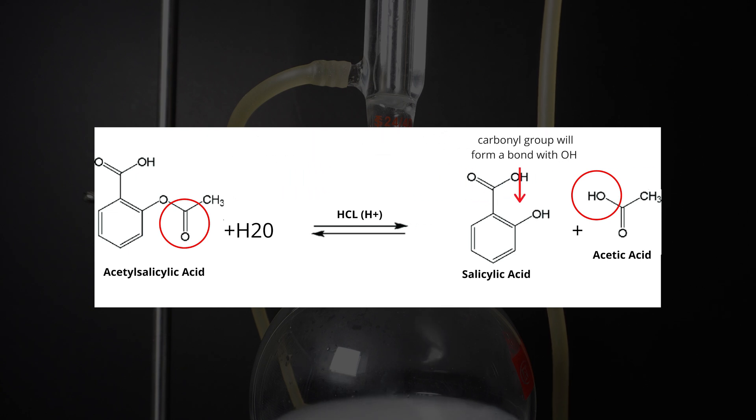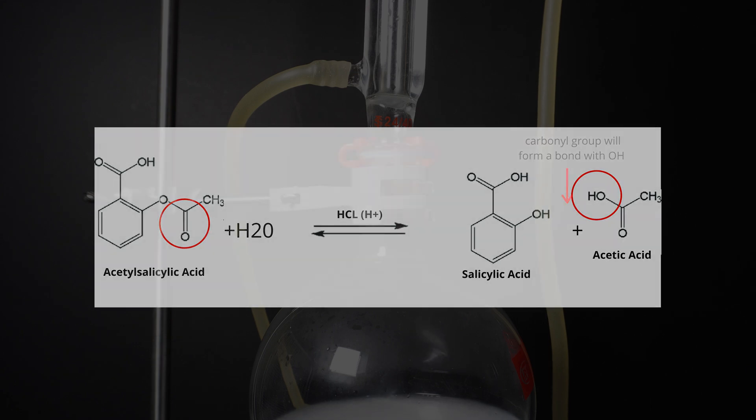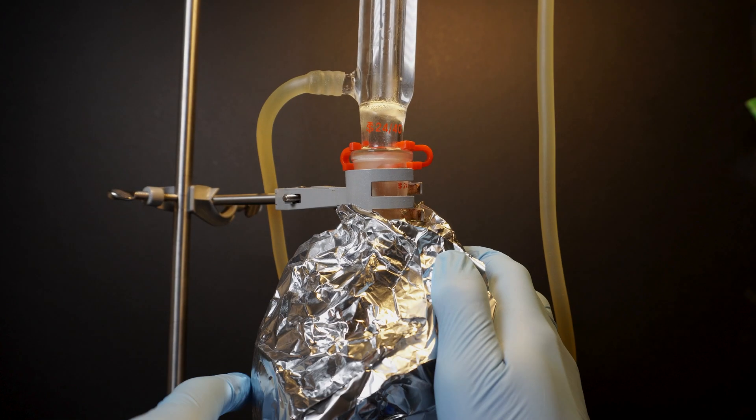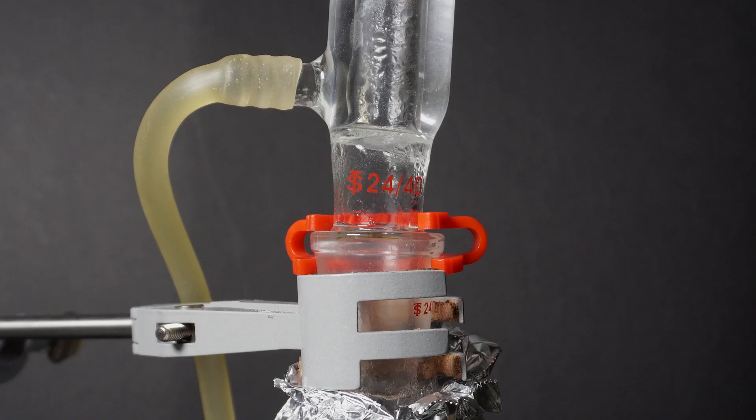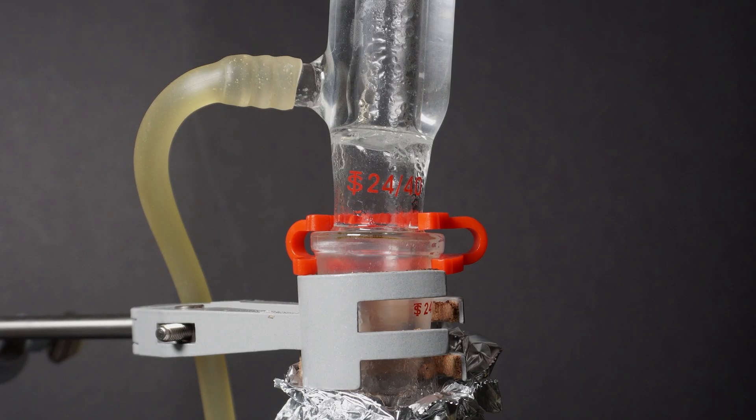To get everything to boil nicely I add some aluminum foil to insulate my round bottom flask. This will speed everything up just a little bit more. Once I see phase change in my condenser I start the 30 minute clock.